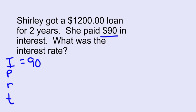She paid $90 in interest. So we have I as $90. P is the principal. The total loan was for $1,200, so P equals $1,200. R is the interest rate, which we don't know. And T is time. The loan was for two years, so T equals two.